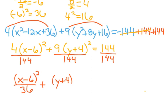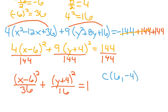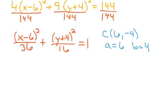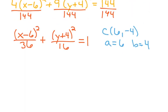So now when we reduce: 4 goes into 144 thirty-six times — notice the larger numbers are on the bottom when we're reducing, so that's where your reduced number goes. So the 36 is going to be on the bottom, plus that 9 and the 144 reduce — 9 goes into 144 sixteen times — and then this is equal to 1. Now this is in standard form. So in this case the center is — switch the symbol of the x parentheses, switch the symbol of the y parentheses — and that gives us our (h, k). And a is the square root of the larger denominator, so in this case a is going to be 6. b is going to be the square root of the smaller denominator — square root of 16 — so b is 4.